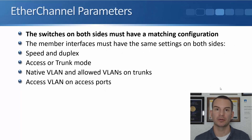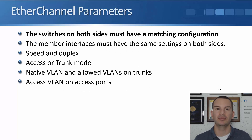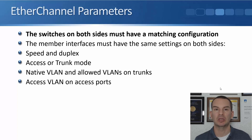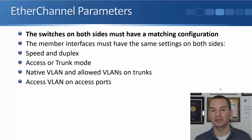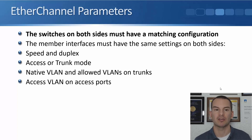For EtherChannel parameters, the configuration has to match on both sides of the link. Settings that must be the same on both sides include speed and duplex, whether the port is set to access or trunk mode, the native VLAN, the allowed VLANs, and the access VLAN if it's an access port.